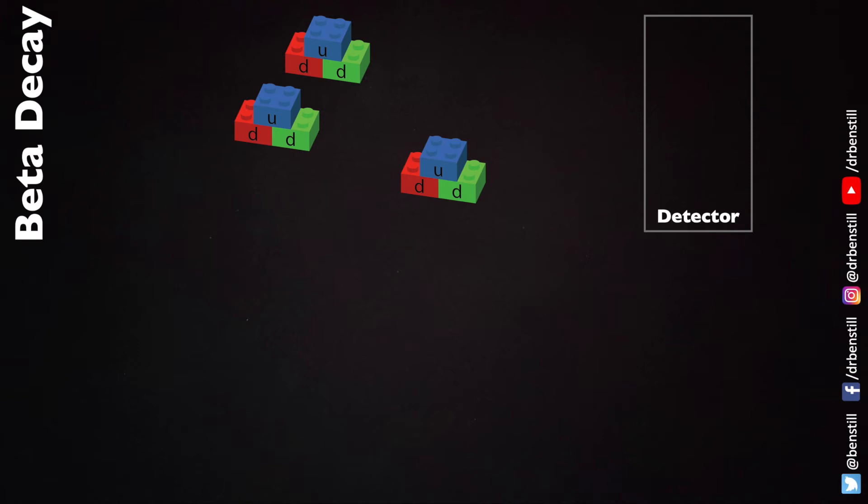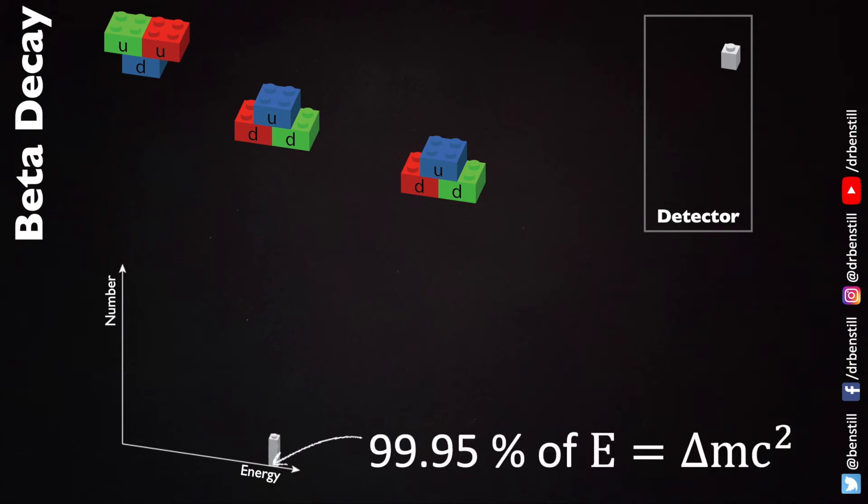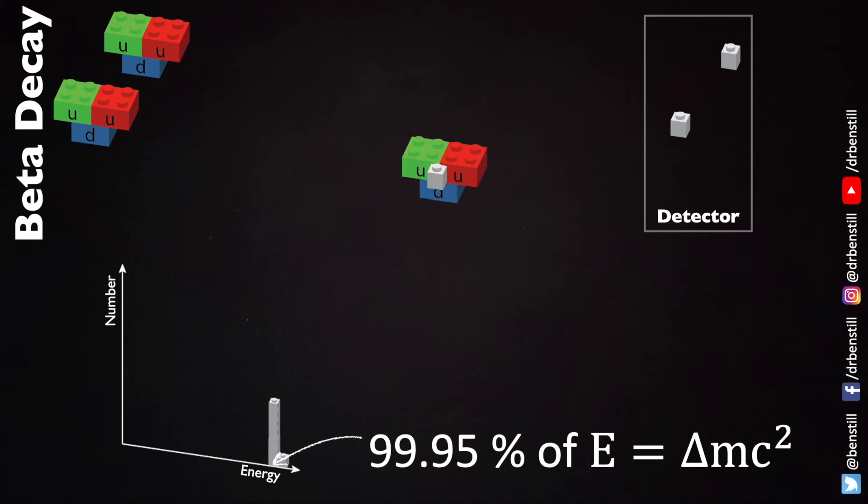So that means that if we measure the energy of electrons that are coming from nuclei that are undergoing beta decay we would expect the electron to come away with the same energy each time because it's related only to the difference in mass between the neutron and the proton and electron. So every time a neutron turned into proton and electron we measure the energy of the electron and we would expect that every single electron would have pretty much the same energy and our graph would build in this way as we measured more and more electrons.